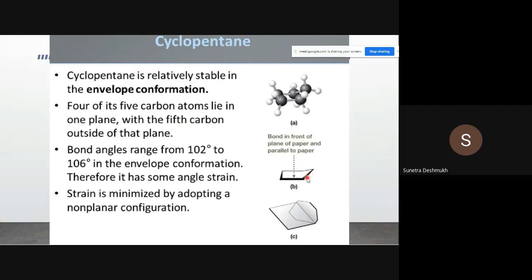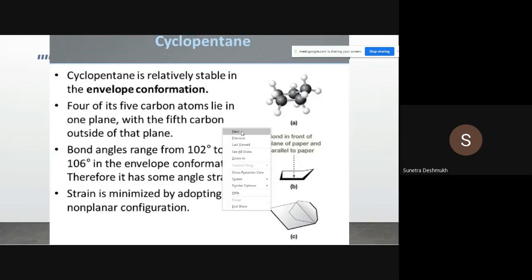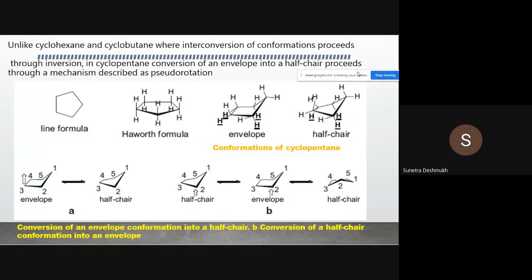The fifth carbon atom is pulled slightly away from the plane of the molecule. Bond angles range from 102 degrees to 107 degrees across its conformations. Angle strain is minimized by adopting a non-planar configuration.